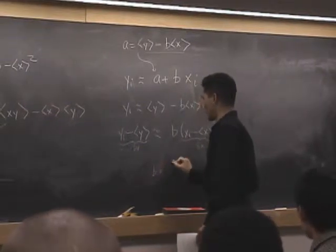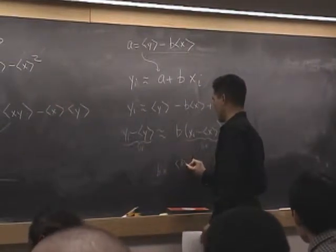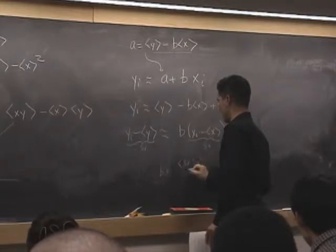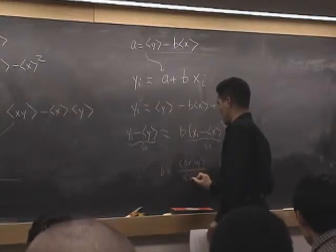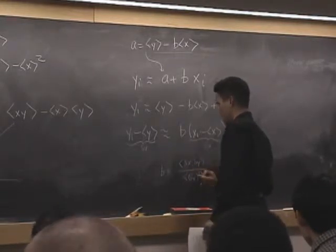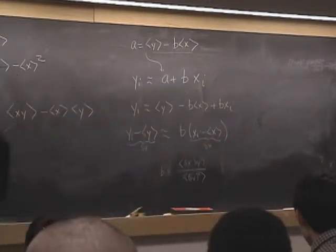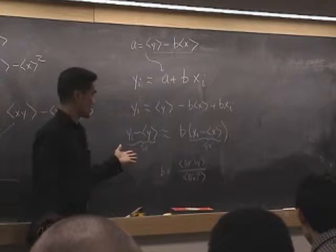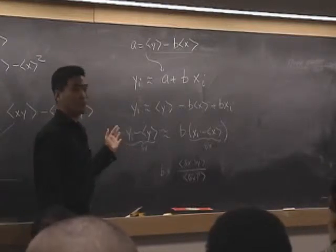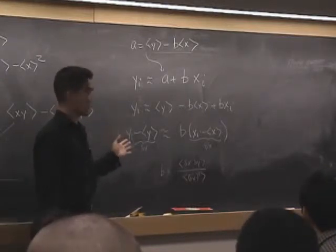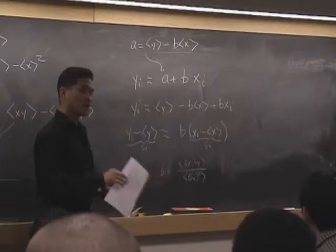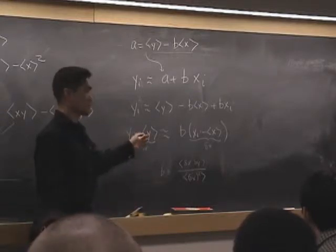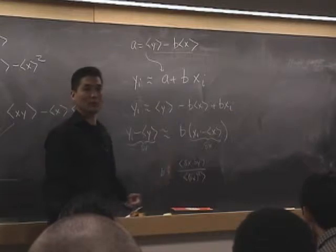The slope is given by this quantity, which is the same as this formula right here. This is a common trick in linear models: before you do anything at all, you take your data and subtract off the mean. That simplifies some of the formulas.